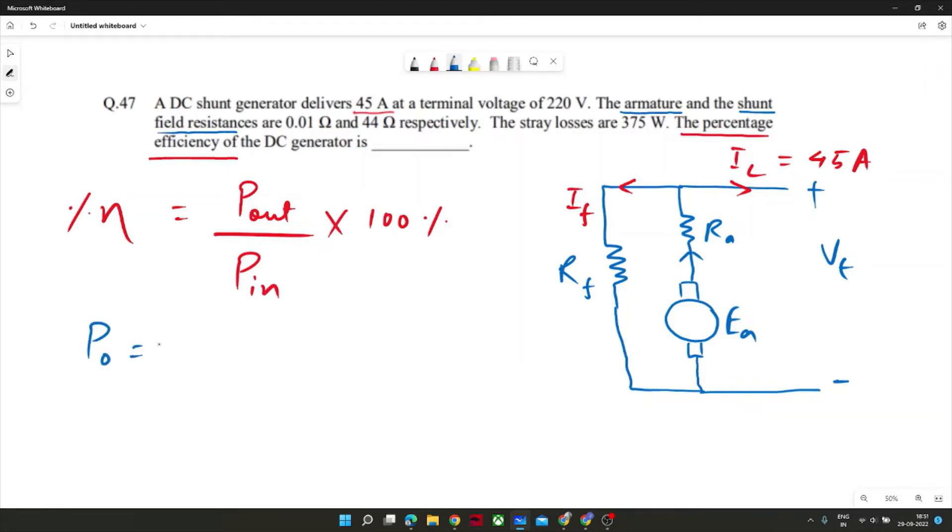P0 is equal to Vt Il, so Vt Il, that is 220 into 45, and it will come out to be 220 into 45, that is 9.9 kilowatt.